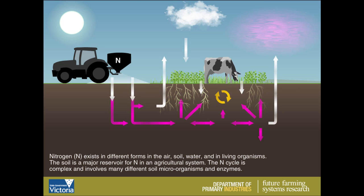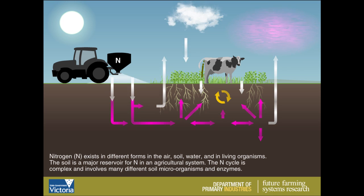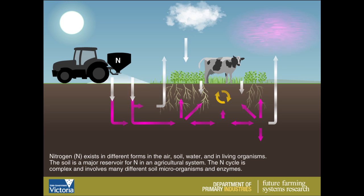Nitrogen exists in different forms in the air, soil, water and in living organisms. The soil is a major reservoir for nitrogen in an agricultural system.